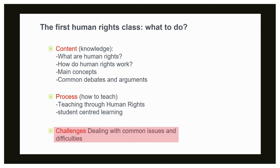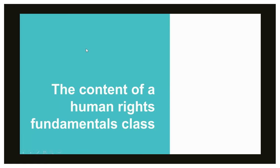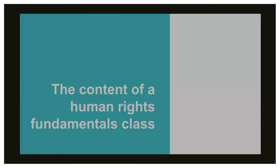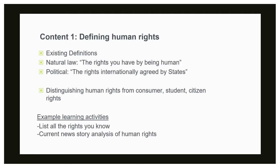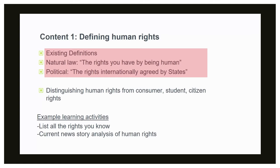The last issue we'll be talking about is challenges for teaching that first human rights class — how you deal with the common challenges and difficult questions. In terms of the content, one of the important things to address early on is defining human rights: what is a human right? What does it mean? In terms of definitions, it's useful to show there are a couple of ways to understand human rights. There's the easy way — these are the rights you have by being human — which is probably the most common way people define them, and this comes out of a natural law idea.